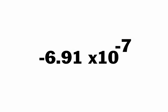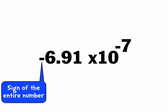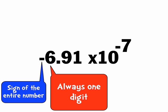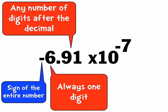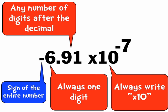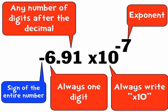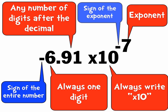This number is also in scientific notation, so here are some parts to think about. This negative sign in front of everything is the sign of the entire number. In scientific notation, there's always one digit to the left of the decimal, and any number of digits to the right of the decimal. You always write times 10 to the something, and then there's an exponent, and the negative sign is the negative sign of the exponent.